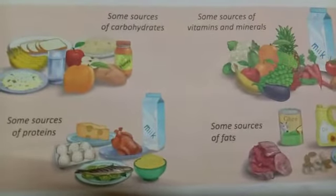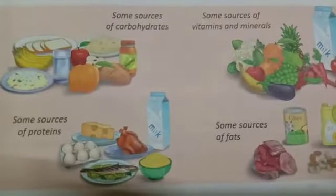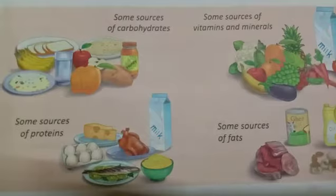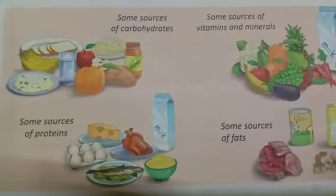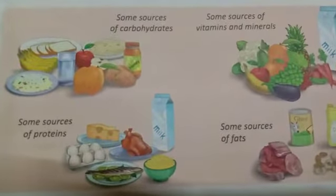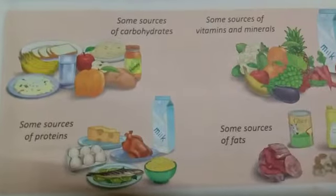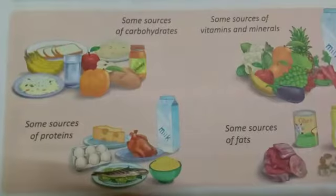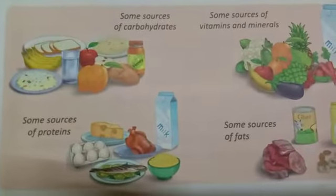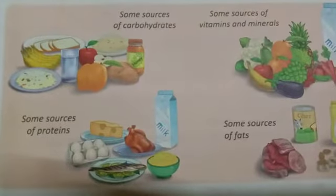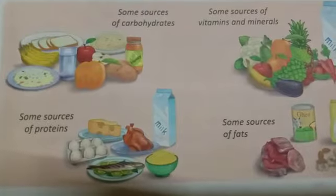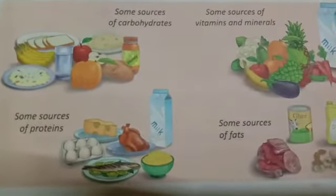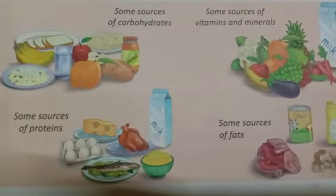You can see the food items that contain carbohydrates: bread, rice, wheat, fruits, bananas, mangoes, sugar, potato, corn — these all are carbohydrates. Carbohydrates provide energy to our body.